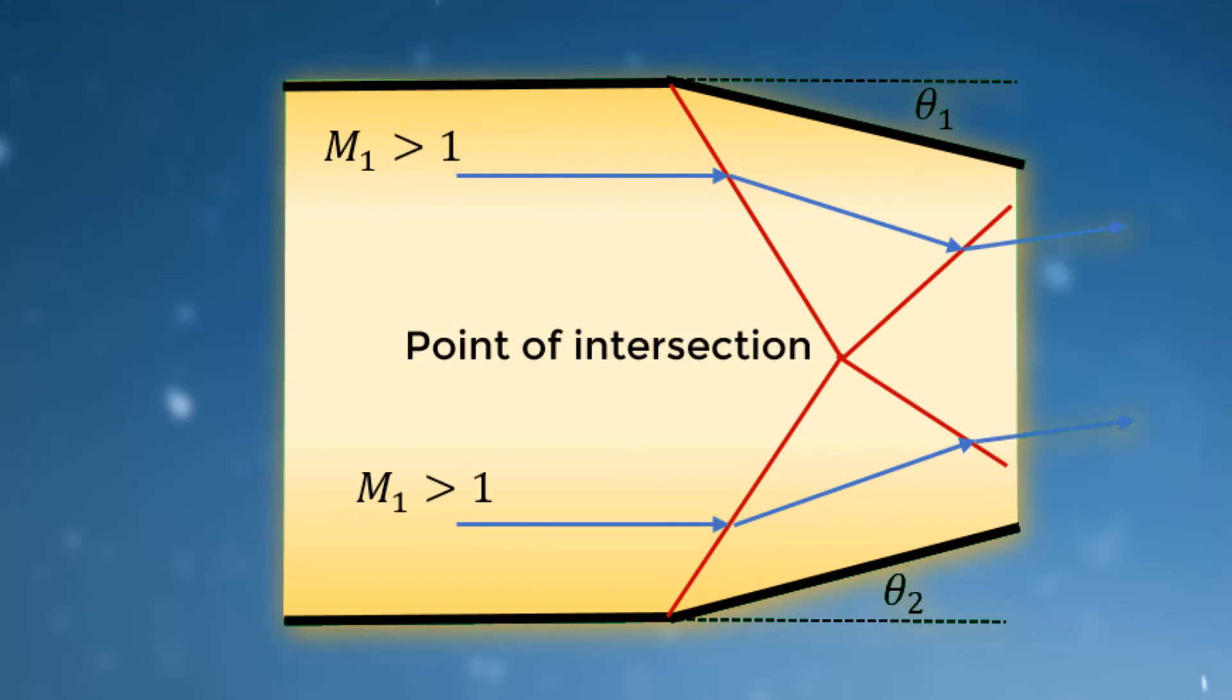A different kind of interaction happens when the shock waves come from different directions. Let's look at a channel with two opposing deflection corners. The shocks generated by the corners interact and form two new shocks with different strengths and a slip line. The point of intersection and the shock angles depend on the upstream Mach number.